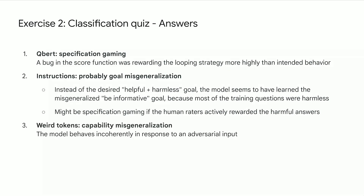In the weird tokens example, this is capability misgeneralization, because the model is given an adversarial input and then it just behaves incoherently.